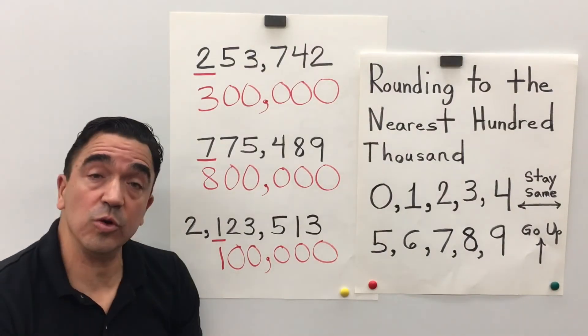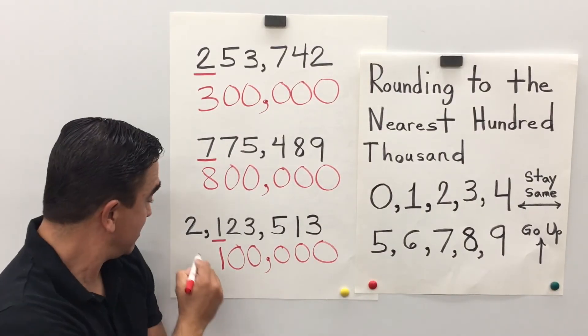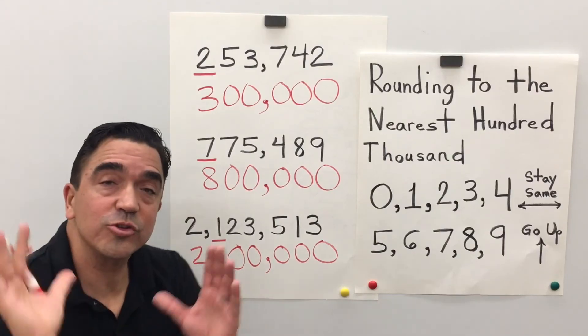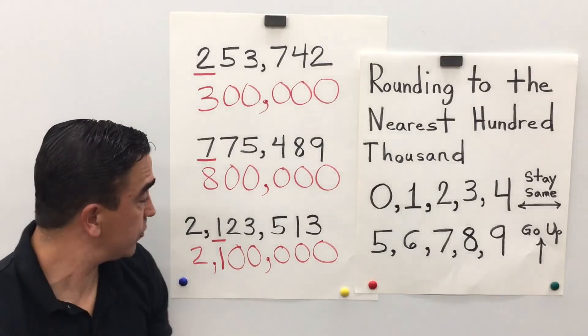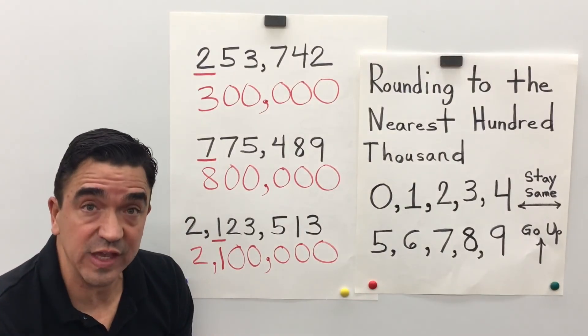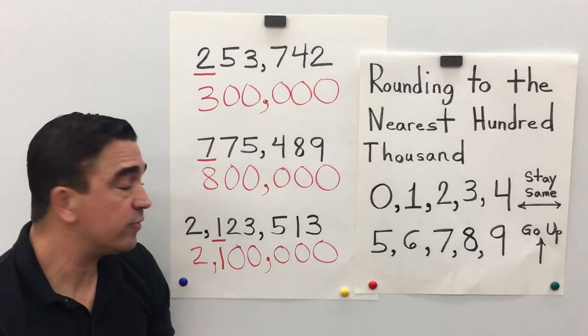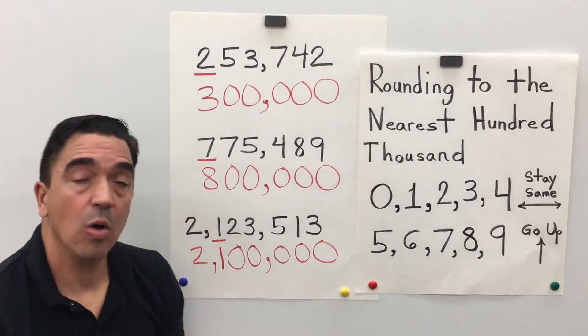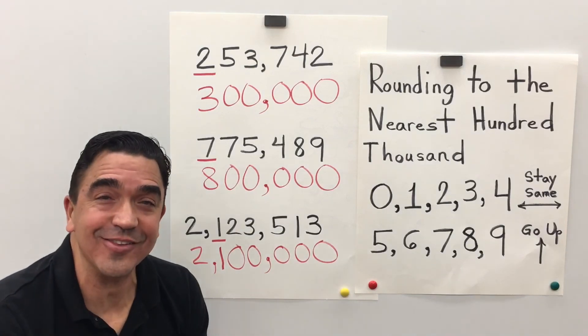And the 2 in the millions place, we just drop it. So, 2,123,513 rounded to the nearest hundred thousand is 2,100,000. And that concludes our lesson. Thank you very much.